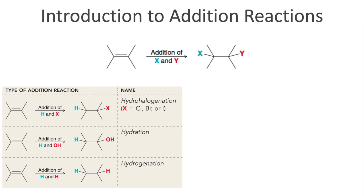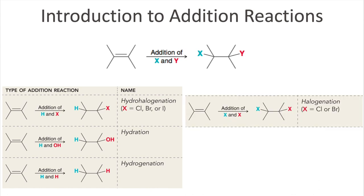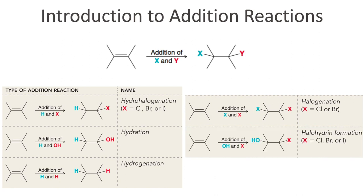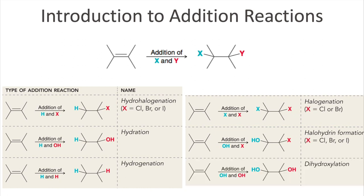We can simply add two hydrogens across that double bond — that is called hydrogenation. If instead both groups are halogens, we have done halogenation, adding two chlorines or two bromines across the double bond. If we add only one halogen and an OH on the other side, that is called halohydrin formation. And if we add two OHs across the double bond, we call that dihydroxylation.